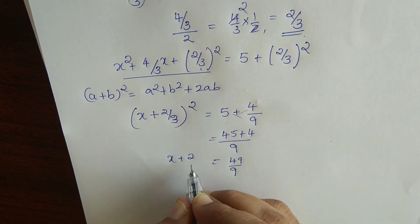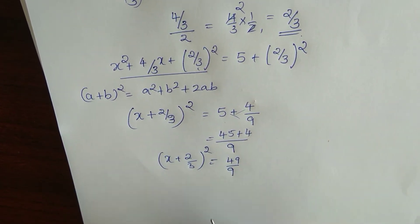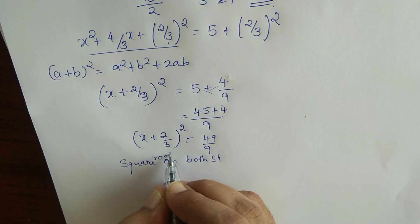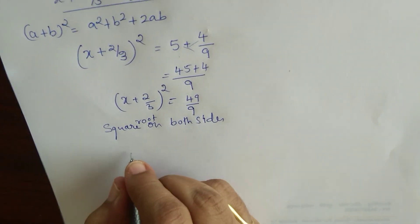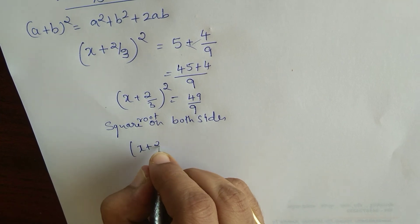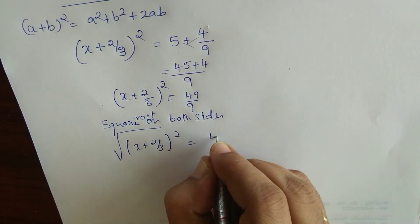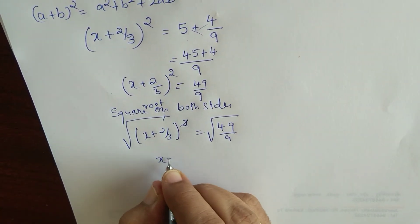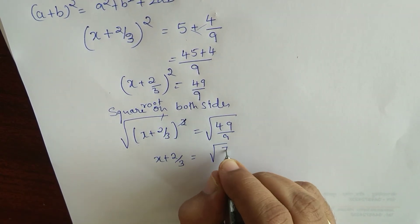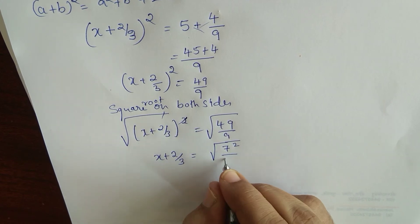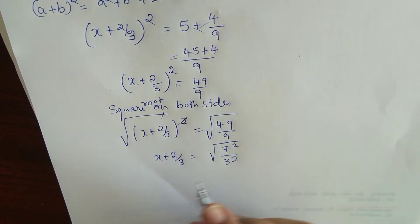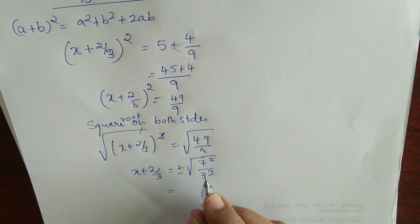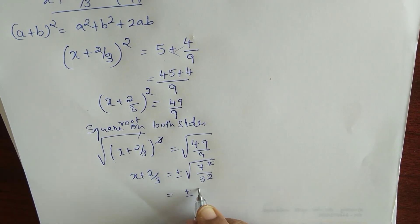So (x plus 2 by 3) whole square equals 49 by 9. Taking the square root on both sides, the squares cancel. Since 7 squared is 49 and 3 squared is 9, we get x plus 2 by 3 equals plus or minus 7 by 3.